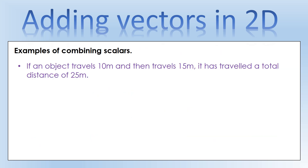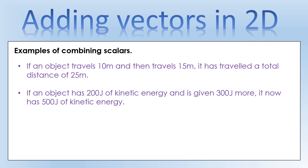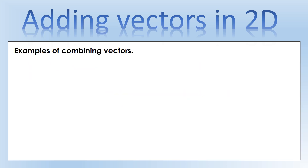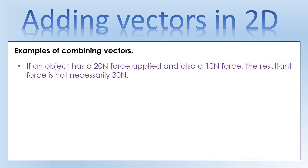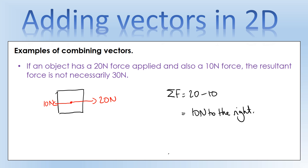Vectors work differently mathematically to scalars. If we combine scalars - an object travels 20 meters then 15 meters - it has traveled a total distance of 35 meters, a definitive answer. Same with energy: 200 joules plus 300 joules gives 500 joules. But with vectors, if an object has a 20 newton force and a 10 newton force applied, the total isn't necessarily 30 newtons. For example, if they act in opposite directions, adding them gives only 10 newtons to the right - not 30.